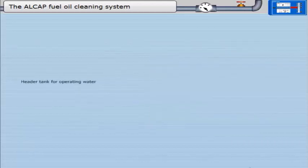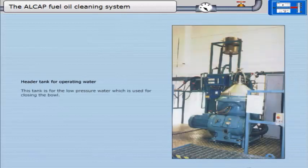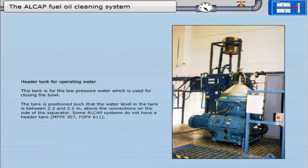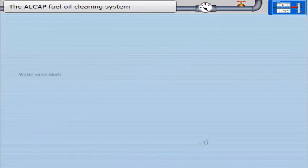Header tank for operating water. This tank is for the low pressure water which is used for closing the bowl. The tank is positioned such that the water level in the tank is between 2.2 and 3.2 metres above the connections on the side of the separator. Some ALCAP systems do not have a header tank.